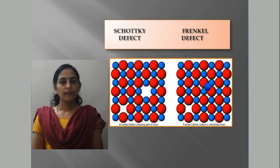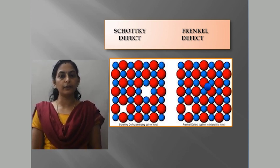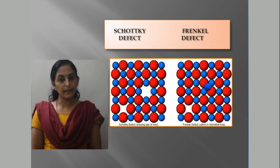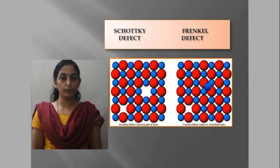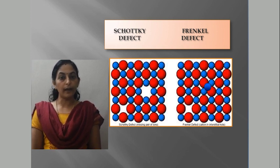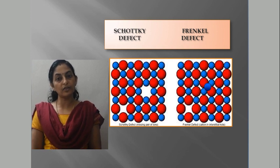Comparing the two: the Schottky defect is a vacancy defect where cations and anions are missing from their lattice sites. The Frenkel defect is both a vacancy and an interstitial defect — the ion leaves its lattice site and moves to a new interstitial location, so it is not completely lost.